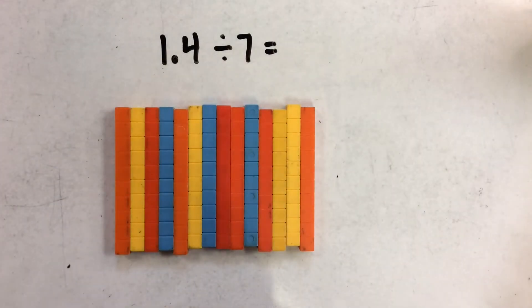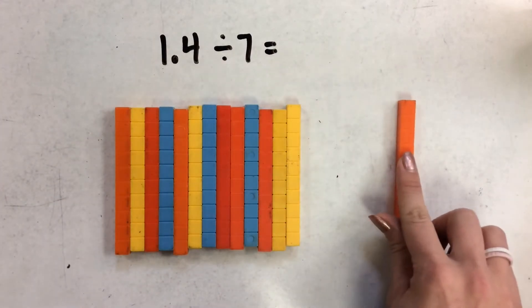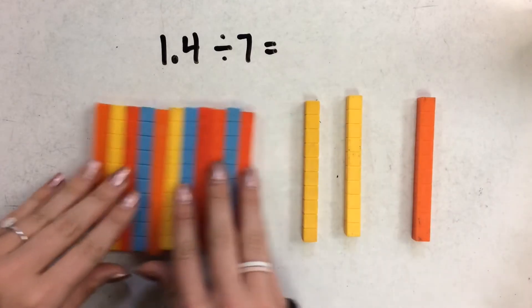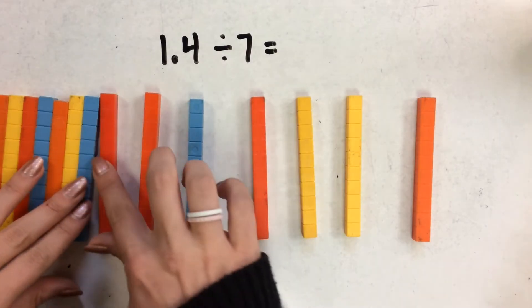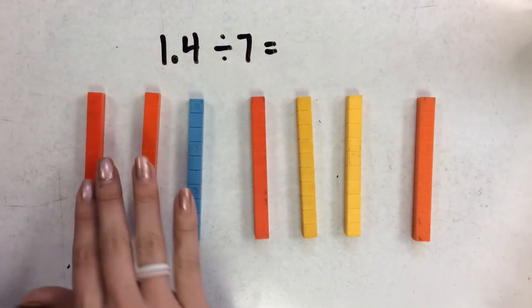And I'm going to put them into 7 groups. So I have 1, 2, 3, 4, 5, 6, 7. Okay, so there's my 7 groups.